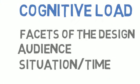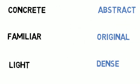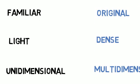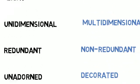Because vision and memory are intertwined, both cognitive and emotional factors can influence perception. Perception depends on the availability of working memory, which depends on the cognitive load imposed by a design, which is in turn dependent on its level of abstraction, familiarity, density, dimensionality, redundancy, and adornment.